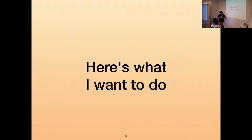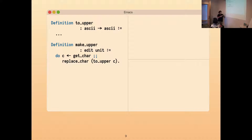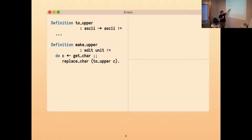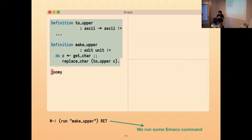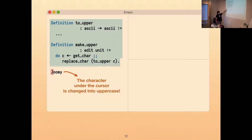Here's what I want to do using these things. I want to be able to define Coq functions. The first one is a function that takes a character to a character and makes it uppercase. The second one is an editor macro: it gets a character first, binds it to C, and then replaces the character with the uppercase version of C. So I can step through this, enter some new text into the buffer, and the cursor is on J. I want to run this editor macro with a reference to make_upper, and have the J uppercased.